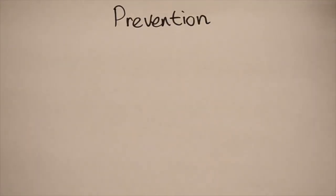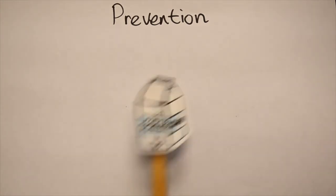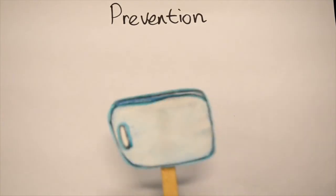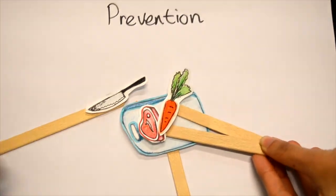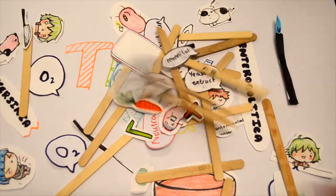This infection can be prevented by firstly maintaining hygiene by washing our hands with antiseptic soap, consuming pasteurized milk, cooking our meat thoroughly, and lastly to prevent cross-contamination of meat and vegetables. So remember to stay free of Yersinia enterocolitica. Thank you.